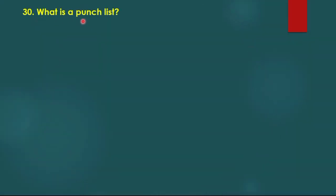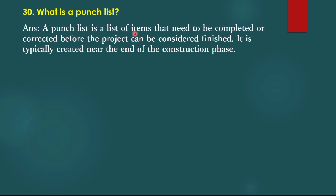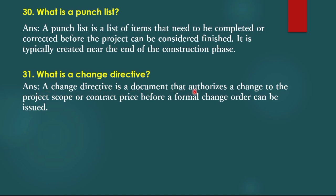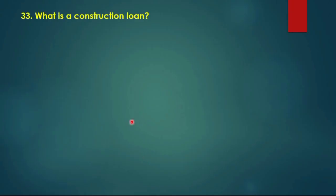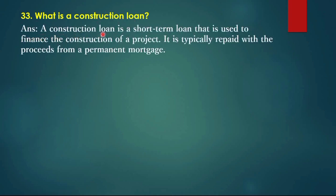Question 30: What is a punch list? A punch list is a list of items that need to be completed or corrected before the project can be considered finished. It is typically created near the end of the construction phase. Question 31: What is a change directive? A change directive is a document that authorizes a change to the project scope or contract price before a formal change order can be issued. Question 32: What is a lien? A lien is a legal claim against a property used to secure payment for work done on the property.